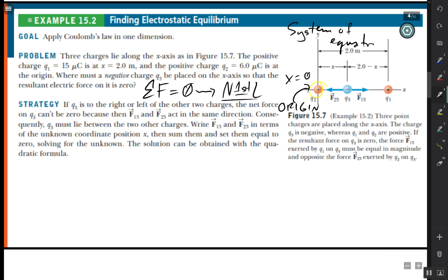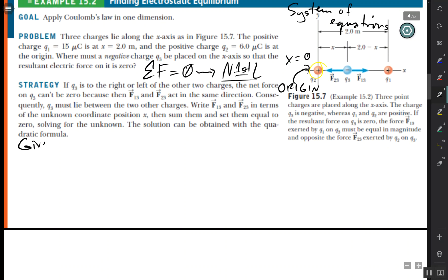Let's see what we're given. We're given that Q1 is 15 microCoulombs and that it is actually 2.0 meters away. We're given that Q2 is 6 microCoulombs and it is actually at the origin. Take note, the sig figs. So when we have micro, take note that micro is 10 to the negative 6.